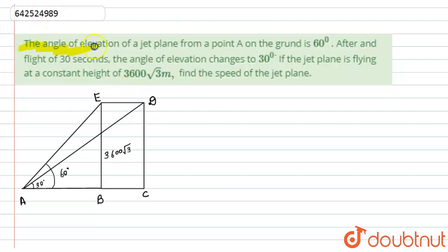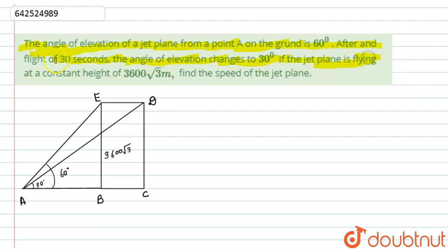Here we have given: the angle of elevation of a jet plane from a point A on the ground is 60 degrees, and after a flight of 30 seconds the angle of elevation changes to 30 degrees. If the jet plane is flying at a constant height of 3600√3 meters, then find the speed of the jet plane.